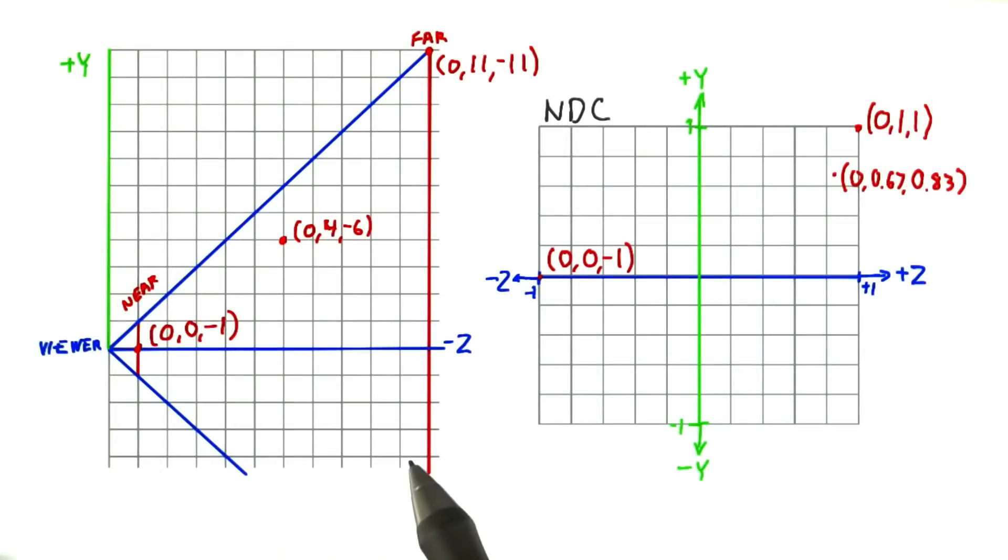Here are plots of the original points in view space and their corresponding new locations. Notice that the negative z axis is pointing to the right for the frustum, and the resulting axis is plus z to the right.